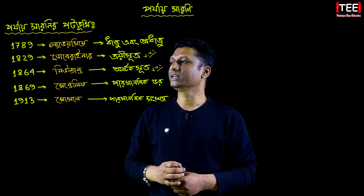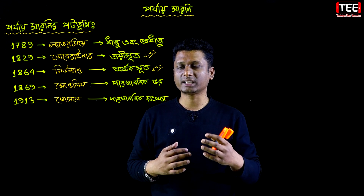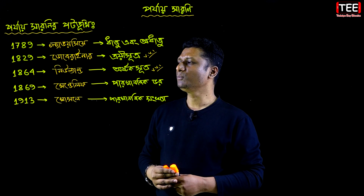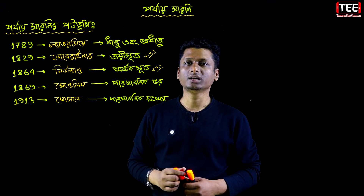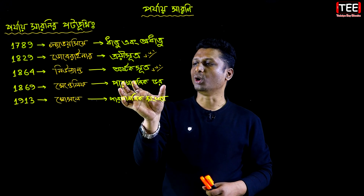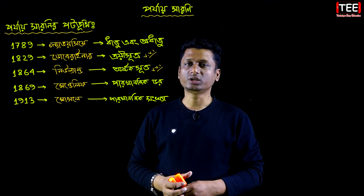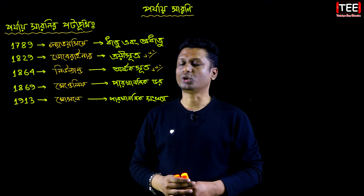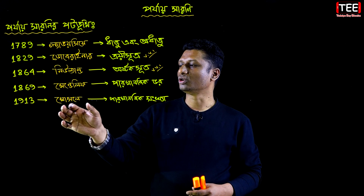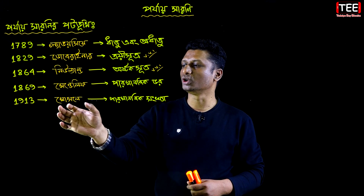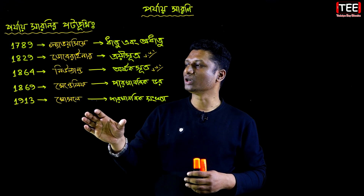আরেকটি শুত্রের প্রবর্তন করেন যেটা পর্যায় সারণীতে আরেক ধাপ এগিয়ে নেয়। শুত্র তাকে বলা হয় অষ্টক শুত্র। এরপর আসেন মেন্ডেলিফ যিনি পারমাণবিক ভরের অনুযায়ী মৌলগুলোকে সাজান। ১৯১৩ সালে মোসলে আরেক জন বিজ্ঞানী আসেন এবং তিনি প্রথম পারমাণবিক সংখ্যা আবিষ্কার করেন এবং পারমাণবিক সংখ্যার উপর মৌলগুলোকে আবার পারমাণবিক সংখ্যা অনুযায়ী সাজান।